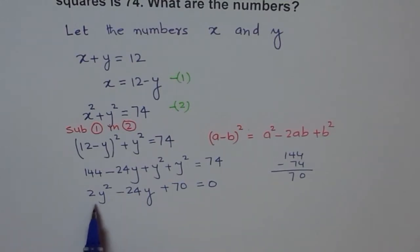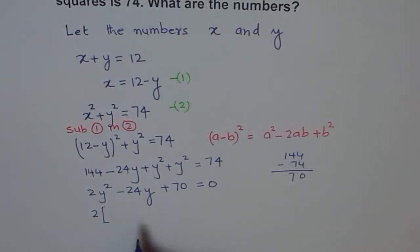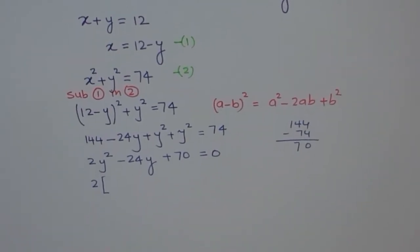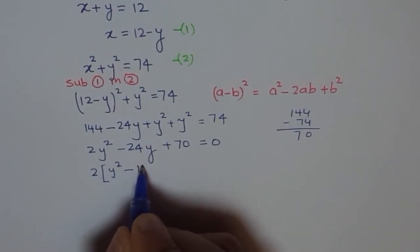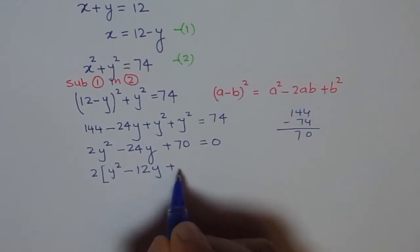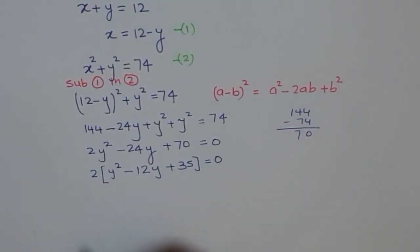Now, we need to factor this or we can use quadratic formula at this stage to find y. First, let's factor, divide everything by 2. We can write 2 also as a factor here. So, here we are left with y square minus 12y plus 35 equals to 0.